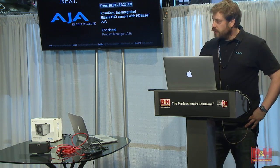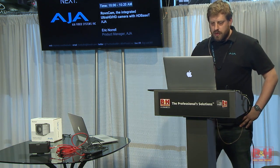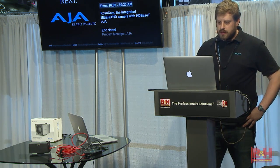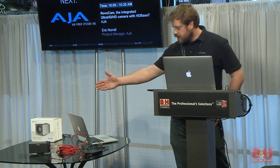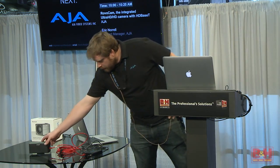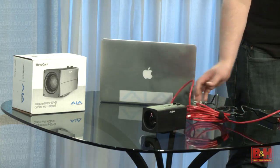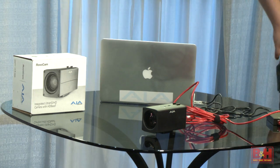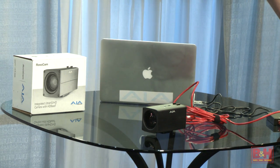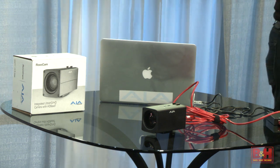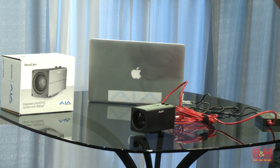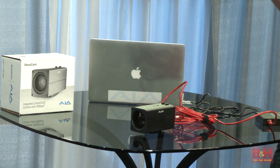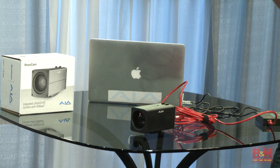Here's a basic workflow diagram for RovoControl. What we've got is the camera — as you can see, I have it set up here. I've got a category cable running right into my receiver. Everything is powered from the receiver unit in this instance, so I would plug that into the wall and it would power the camera up to 100 meters away. I could use either a hardware controller from Sony or a variety of other partners, or RovoControl software.